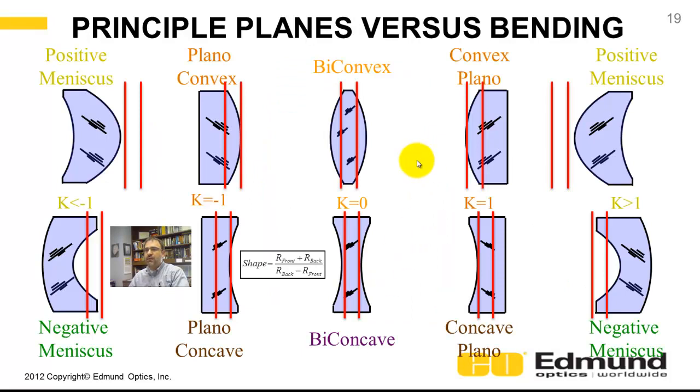Here we've shown how lens bending, with a positive lens, the top row, and a negative lens for the bottom row, how these principal planes shift around with lens bending. And again, these are the Coddington equations.